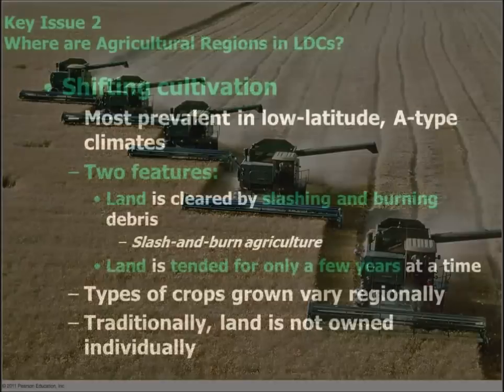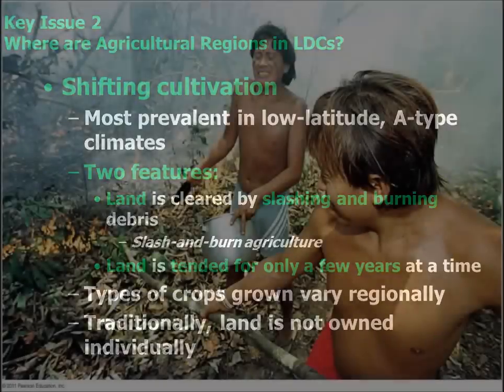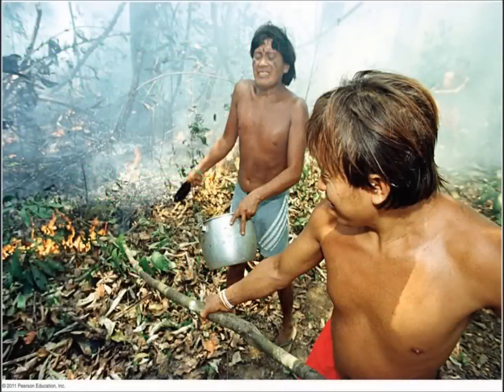One of the issues that contributes to the decline of farmland, especially in MDCs, is the idea of urban sprawl.